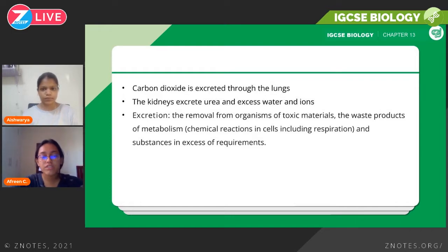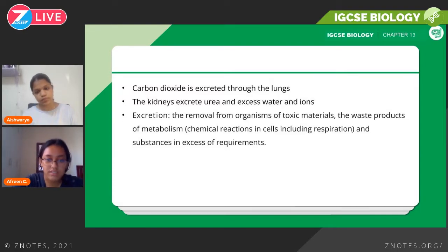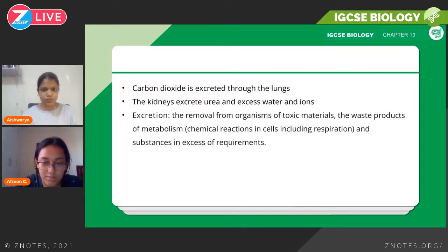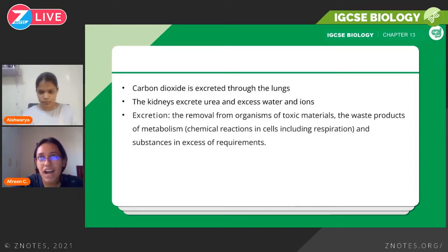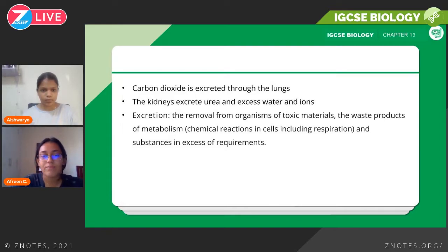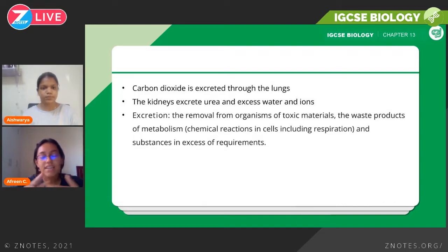So what is excretion? Excretion, if you remember, is one of the seven characteristics of living organisms. The definition is the removal from organisms of toxic materials and waste products of metabolism — so that's carbon dioxide and such — and substances in excess of requirement. This is something you'll have to memorize. I personally haven't seen a question about this, but you never know; it could be worth one or two marks.